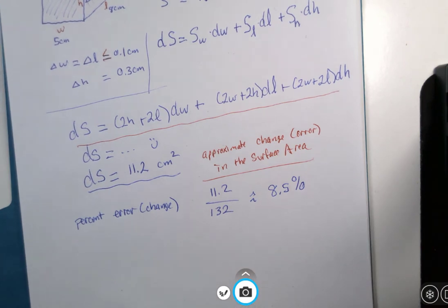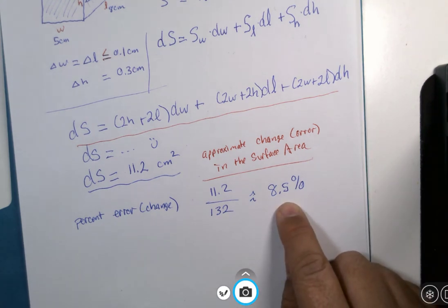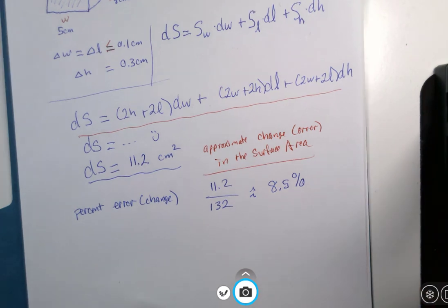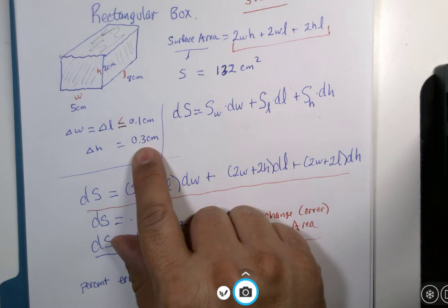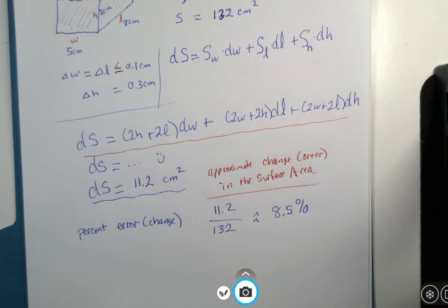And again, the question might be, is that significant? Well, it depends on what the boss asks for. If the boss asks for something within 10 percent, we're good. This machine can stay. If the boss wants it more accurate, then we need a machine with more accuracy than this. You're starting to get the pattern here? All right. I might have one more example for you. So stick around for another segment.